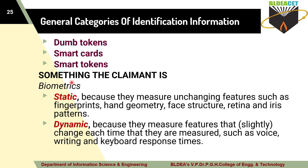The claimant can also use biometrics to prove identification. In biometrics there are two types: static and dynamic. Static refers to unchanging features such as fingerprints, hand geometry, face structure, retina, or iris pattern. Dynamic refers to measurable features that change each time — behaviors based on the human being, such as voice, writing, or keyboard response times. These changing features are called dynamic features. Both can be used to prove identification.